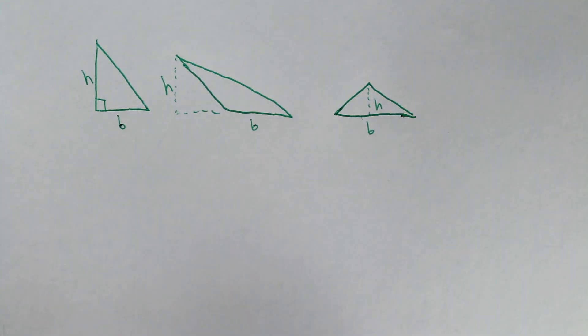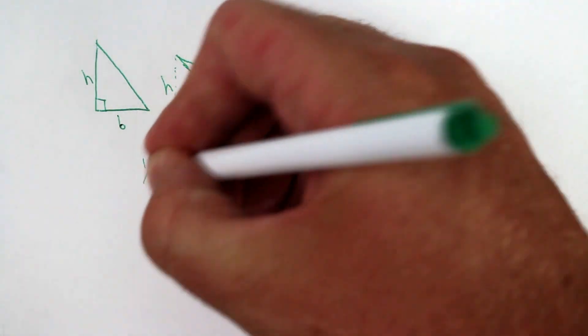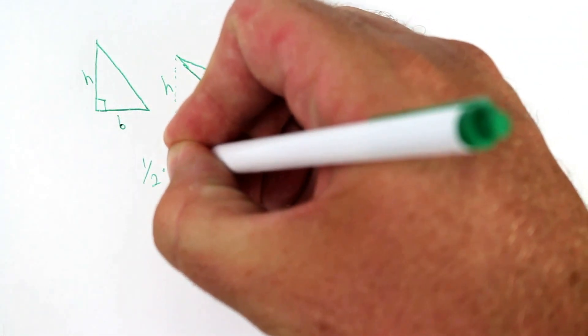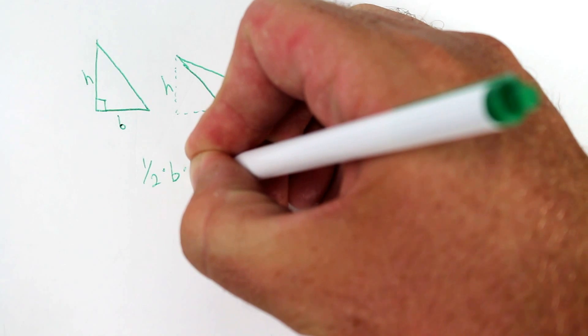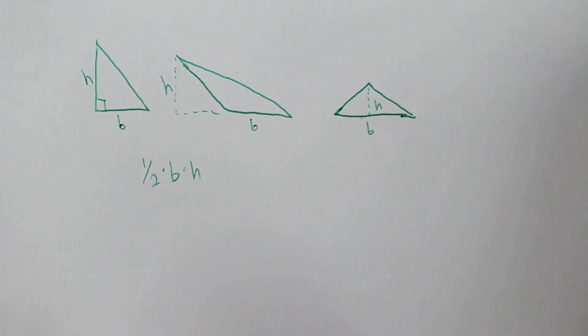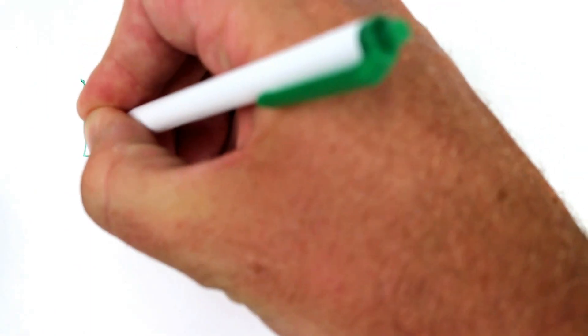So the equation for the area of a triangle is one half times the base times the height. The order doesn't really matter since you're multiplying everything, but that's the conventional order. So let's look at some examples.